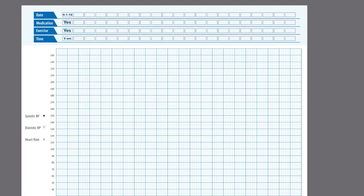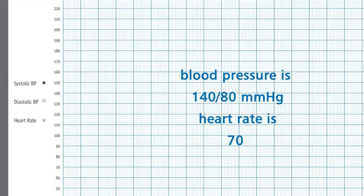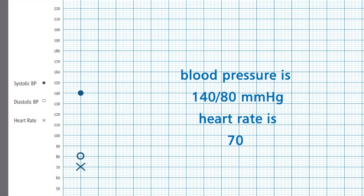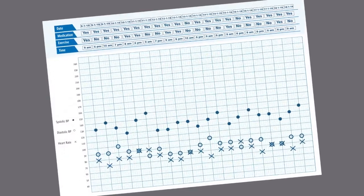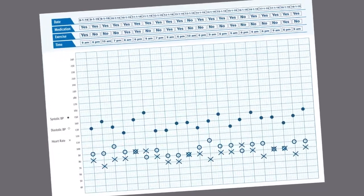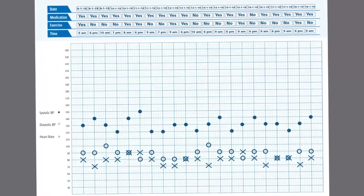Suppose the reading suggests blood pressure is 140 by 80 mmHg and heart rate is 70. It can be plotted accordingly. Kindly take the entire log sheet with you when you visit your doctor. The log sheet will help your doctor understand your blood pressure pattern and advise you accordingly.